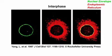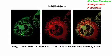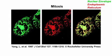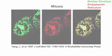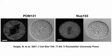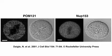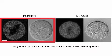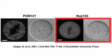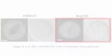At the start of mitosis, the inner and outer membranes of the nuclear envelope break down and merge with the endoplasmic reticulum. At the same time, the nuclear pore complexes that mediate transport across the envelope also disassemble. Transmembrane pore proteins move into the ER while soluble components disperse into the cytoplasm.